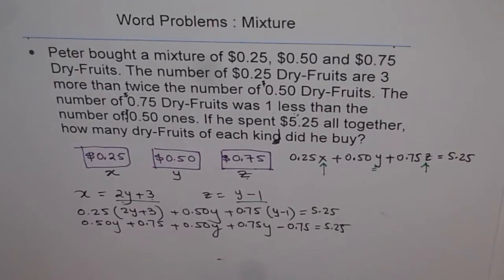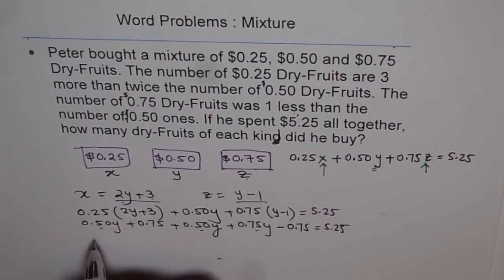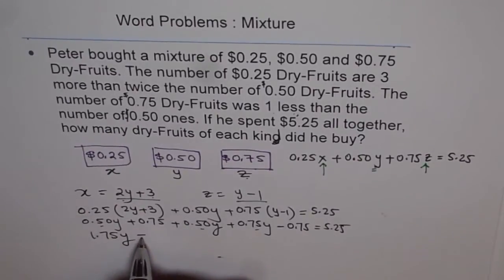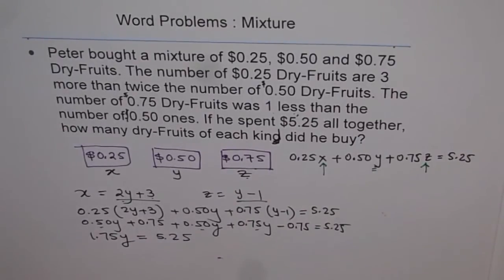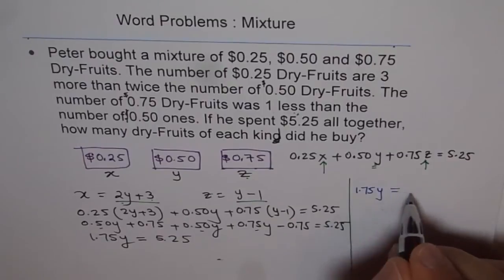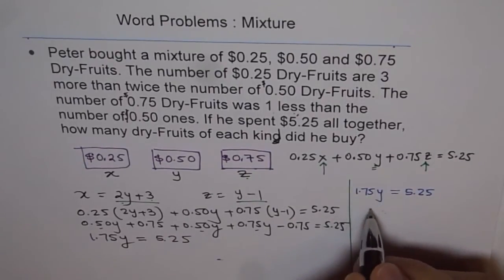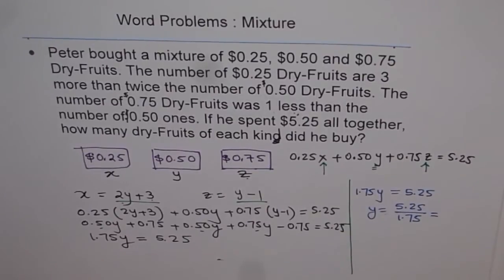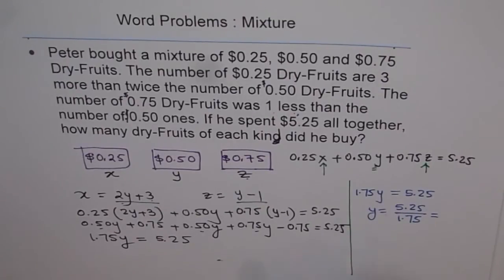Now we have many Y terms — let's count them: 0.50 + 0.50 + 0.75 gives us 1.75Y. And for the constants: 0.75 minus 0.75 is 0. So 1.75Y = 5.25. Dividing both sides by 1.75, we get Y = 5.25 ÷ 1.75, which equals 3. So Y = 3.